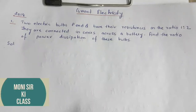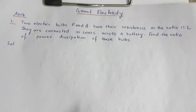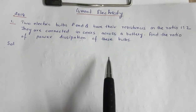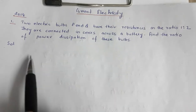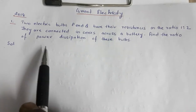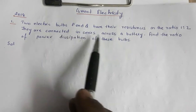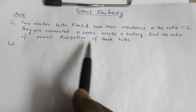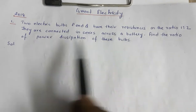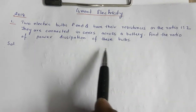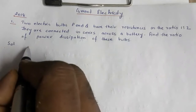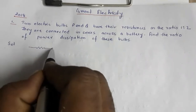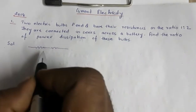Hello everyone, welcome to my channel. In this video I am going to solve a few questions from previous years' 12th board paper. This is from the chapter current electricity. In 2018, there was a question: two electric bulbs P and Q have their resistances in the ratio 1:2. They are connected in series across a battery. Find the ratio of power dissipation of these bulbs.